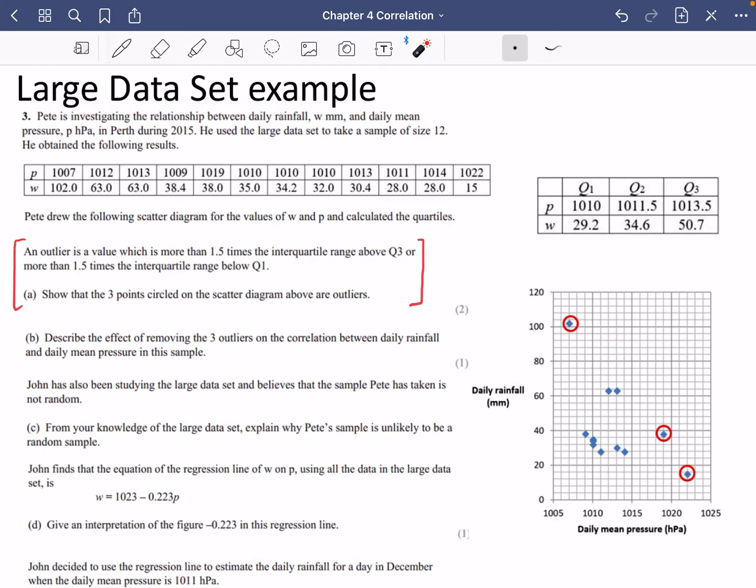One example using the large data set. Pete is investigating the relationship between daily rainfall and daily mean pressure in Perth during 2015. He used a large data set to take a sample of size 12 and obtained the following results. He drew the following scatter diagram for the values of W and P and calculated the quartiles.